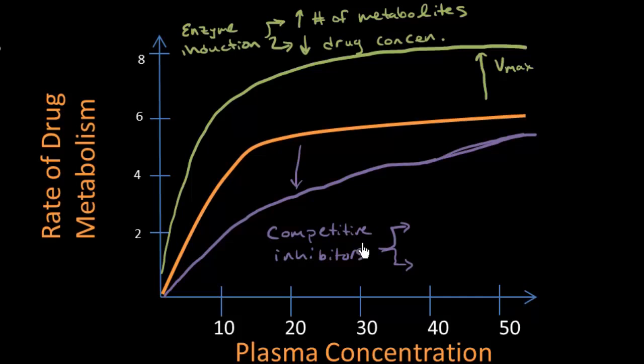With competitive inhibitors, it's exactly the opposite. I'm decreasing metabolism so therefore I'm going to make less metabolites. Decreased number of metabolites.